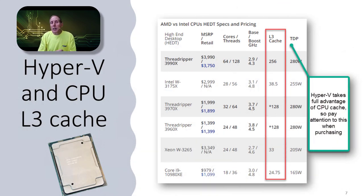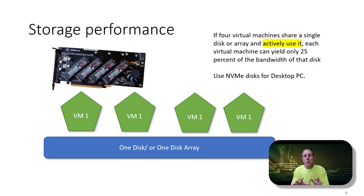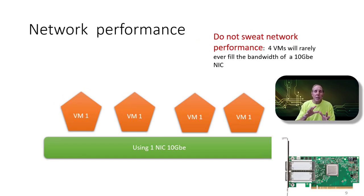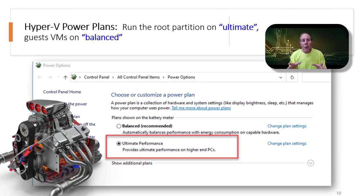Keep in mind Hyper-V and CPU cache — Hyper-V can take full advantage of your CPU cache. So when purchasing CPUs for Hyper-V, take a look at cache values; they can impact performance significantly. If you have four virtual machines on one disk or array all actively using storage, each VM can only yield about 25% of the bandwidth. For desktops or laptops, make sure you're using NVMe. Network performance is one of the least items to worry about — four virtual machines will probably never fill the bandwidth of a 10 Gig network card.